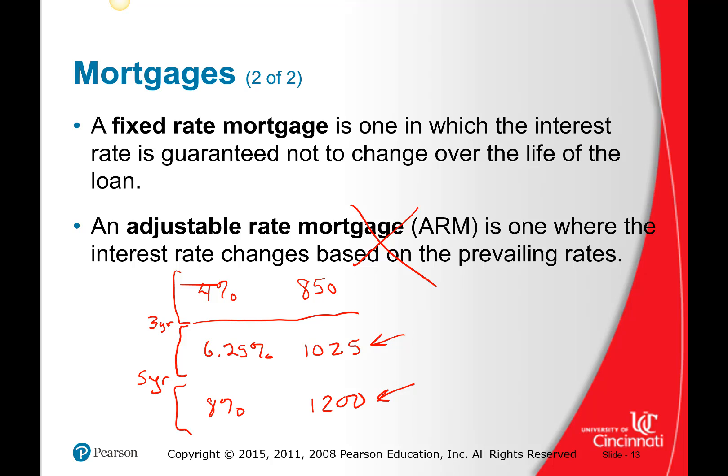Don't do adjustable rate mortgages. Now, sometimes people say, 'Yeah, but if you're only going to be there a couple years, an adjustable rate is the way to go because they give you a really cheap loan rate for the first three years.' My comment is: if you're only going to be there for three years, don't buy a house. Why not? I've got to live somewhere. Rent. Lease.